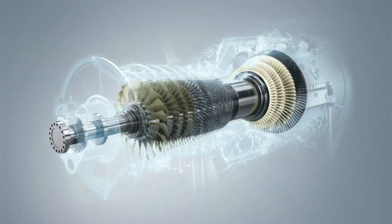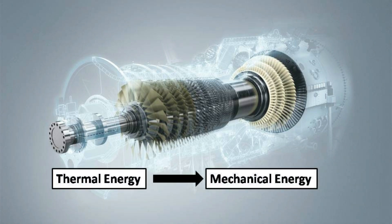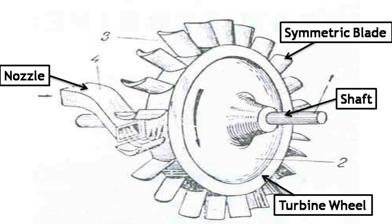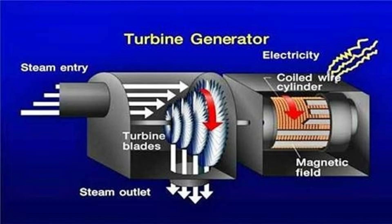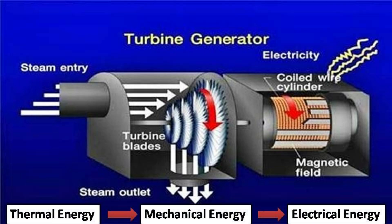A steam turbine is a prime mover that extracts thermal energy from pressurized steam and uses it to do mechanical work on a rotating output shaft. It consists of a rotor or disc and a set of rotating blades which are attached to a shaft. An electric generator known as a steam turbine generator is connected to the rotor shaft, which collects the mechanical energy from the shaft and converts it into electrical energy.